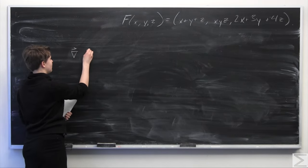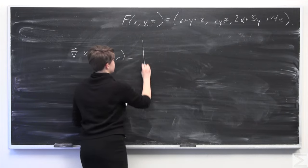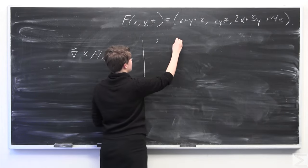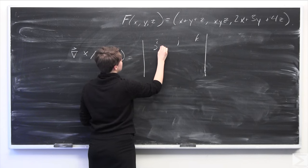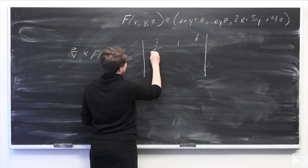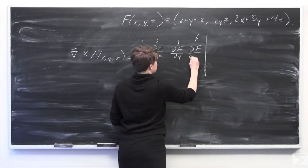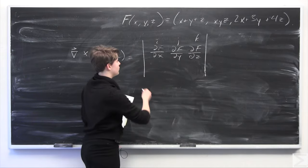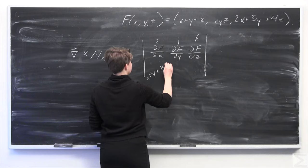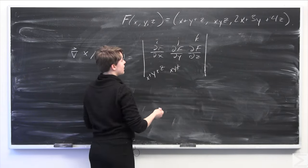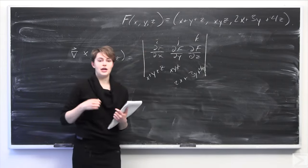Our first step is to calculate the curl of the given vector field. The curl is defined as the gradient vector crossed with F(x, y, z), which we set up as a matrix. We have i, j, and k in the first row; the partial derivative operators ∂/∂x, ∂/∂y, and ∂/∂z in the second row; and the components x plus y plus z, xyz, and 2x plus 3y plus 4z in the last row. We then take the determinant of this matrix.